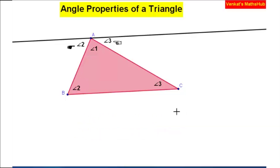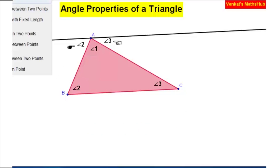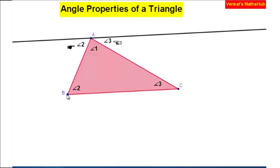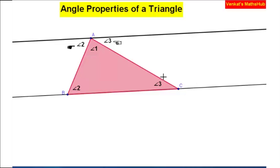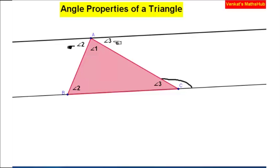Next, I am going to extend the line BC on both sides. Extending the base BC on both sides gives an angle here — this angle is called the exterior angle.